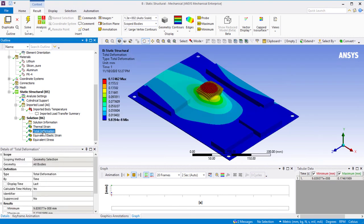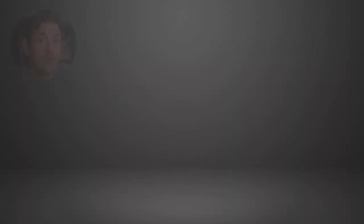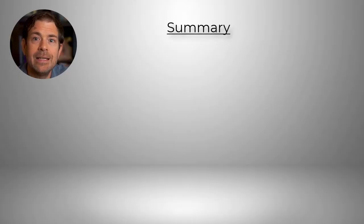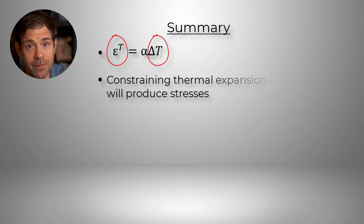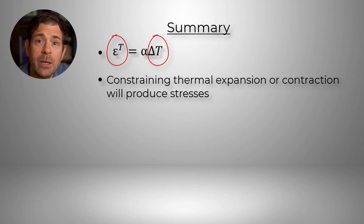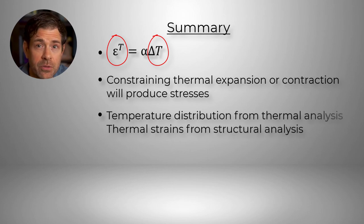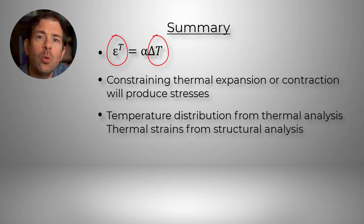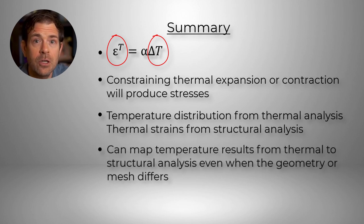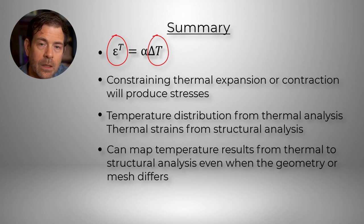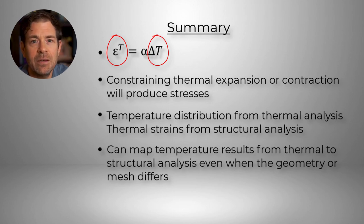Looking at the total deformation, we can get an idea of how much we expect the board to deflect from this thermal condition. So finally, let's summarize the important points to remember. Change in temperature produces thermal strains. If free thermal expansion or contraction of the material is prevented, stresses will develop. Although temperature calculations are done in a thermal analysis, calculating the thermal strains requires a structural analysis. We learned that even when we have slightly different geometries or different meshes in the thermal and structural analyses, we can map the temperature results of the thermal analysis to the structural analysis to be used as thermal loads. We learned how to confirm that the mapping has occurred correctly by using source points and checking the imported load summary.